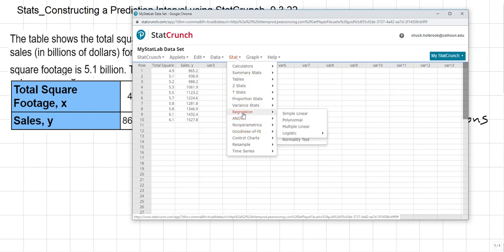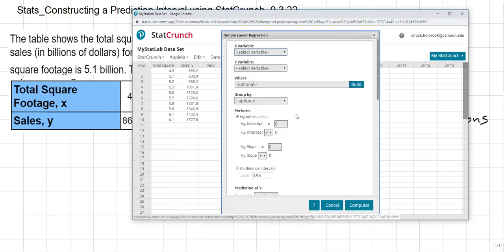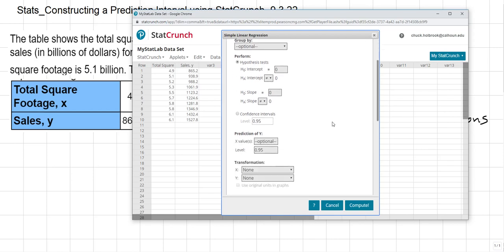We're going to scroll down to Regression. We're going to left-click Simple Linear. And now we're given our input table. For the X variable, we're going to select, obviously, the X variable. And for the Y variable, we'll do the same thing.